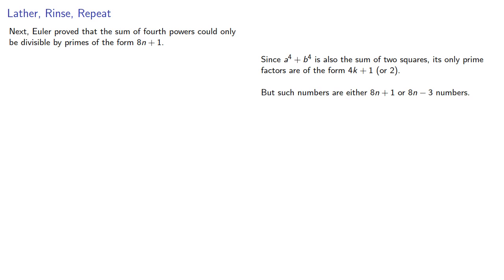Now if a prime has form 8n minus 3, then it's got to divide the difference, but not the sum. And as before, the latter has a factor of a to the fourth plus b to the fourth, so 8n minus 3 can't divide it.